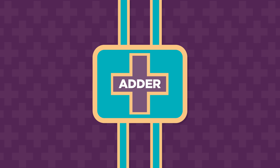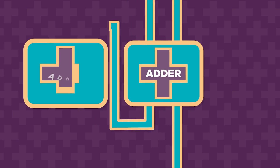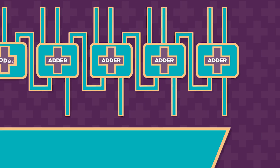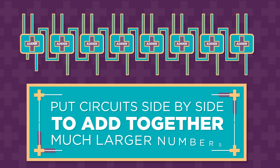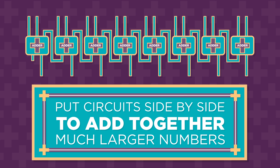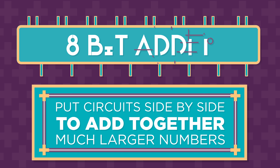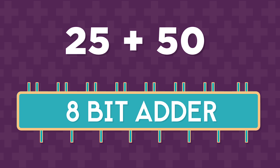Once you have a single adder for adding two bits of information, you can put together multiples of these adder circuits side by side to add together much larger numbers. For example, here's how an 8-bit adder adds the numbers 25 and 50.